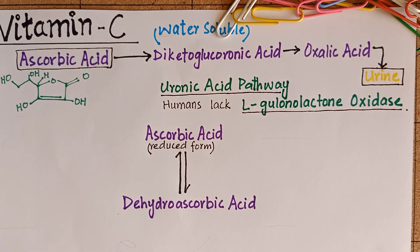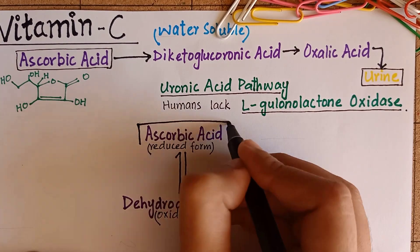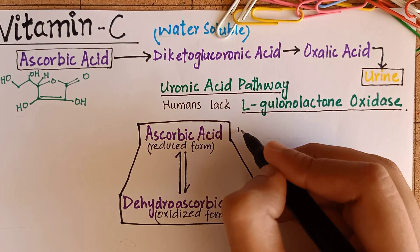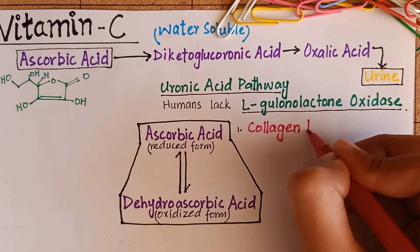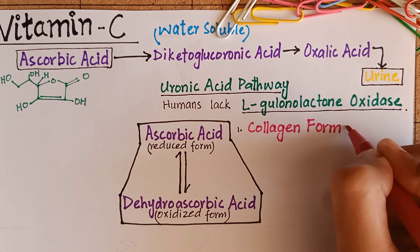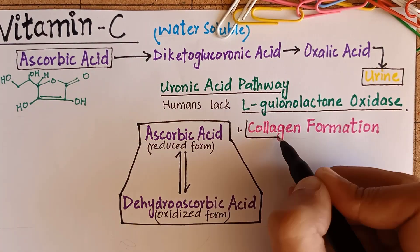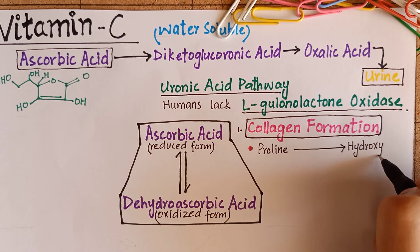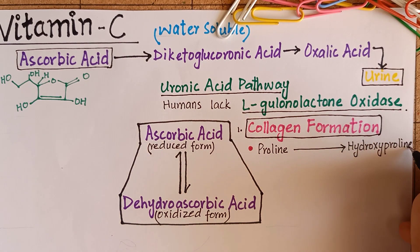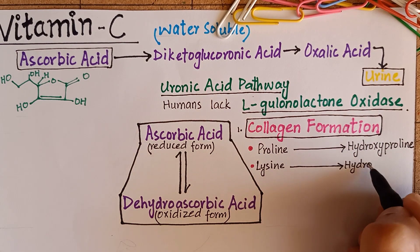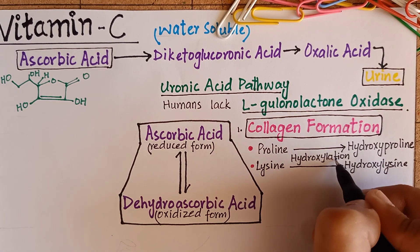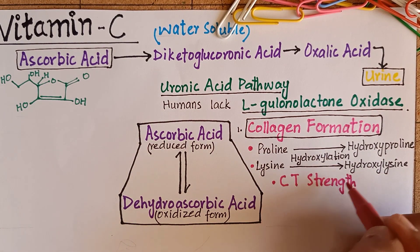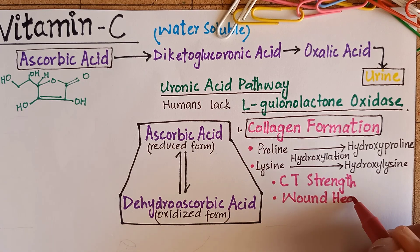Most of the functions of vitamin C are related to this property, such as collagen formation and assembly, where it plays an important role in hydroxylation of proline and lysine residues of collagen. Therefore, it is required for normal collagen cross-linking leading to wound healing.